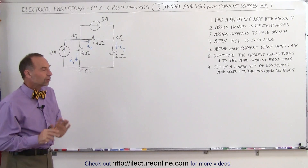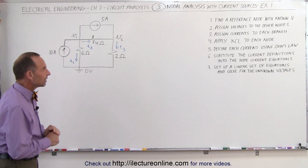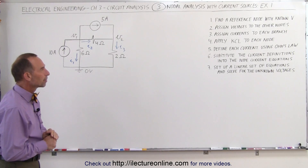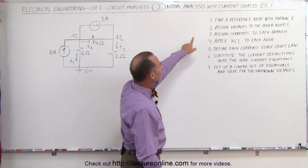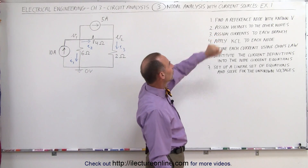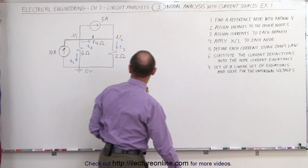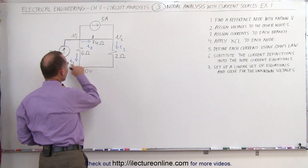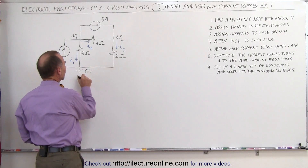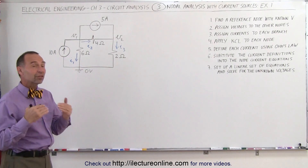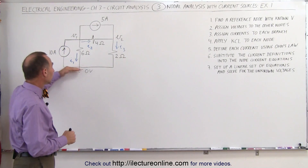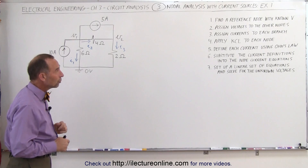We typically use large I's to indicate the current sources. Some folks do it the other way around, but as long as you keep it straight, that's fine. Here are the steps. The first step is to find a reference node with known voltage. We have a node down here at the bottom.